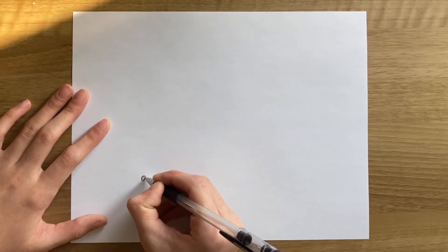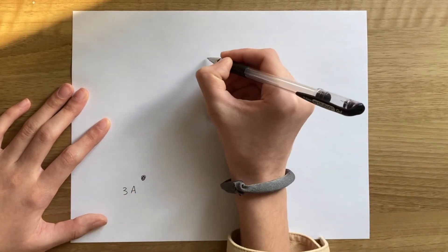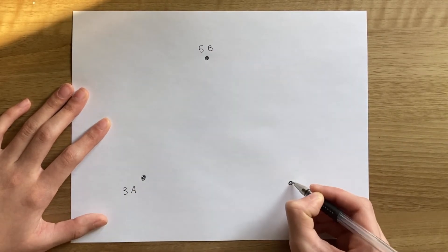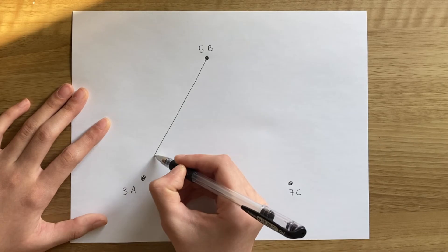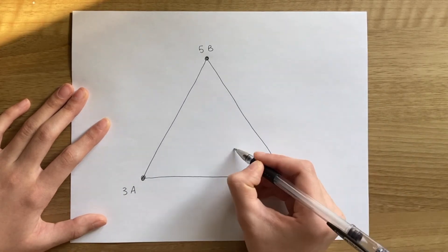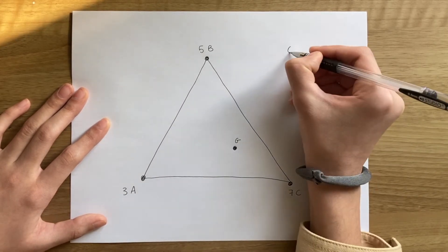What about the center of mass of 3 points? Let's say A has a mass of 3, B has a mass of 5, C has a mass of 7, and their center of mass is G. We'll denote center of mass with the plus symbol.